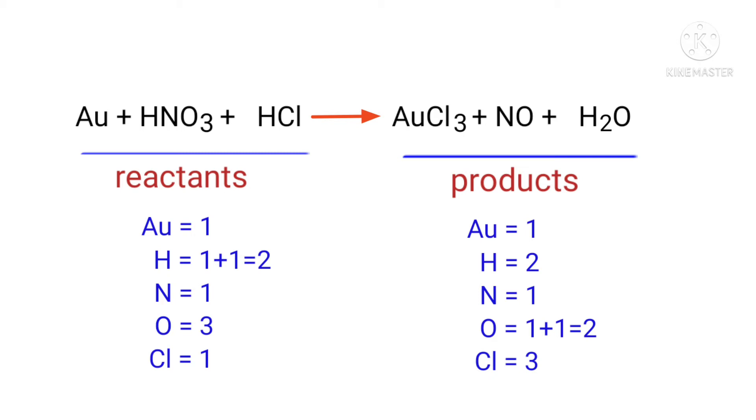The number of atoms are not balanced on both sides. To balance the chemical equation we need to make use of coefficients. A coefficient is a number that we place in front of a chemical formula.